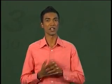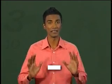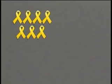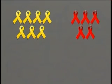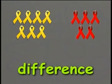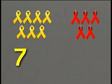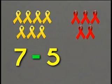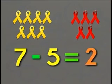For subtraction, we use the minus symbol. Here are 7 yellow ribbons and 5 red ribbons. What is the difference between the number of yellow ribbons and red ribbons? To find the difference, the larger number must minus the smaller number. 7 is the larger number. So, 7 minus 5 equals 2. Very good.